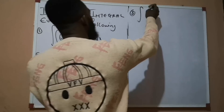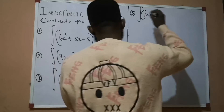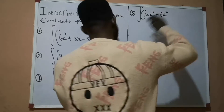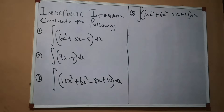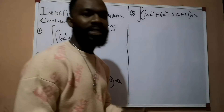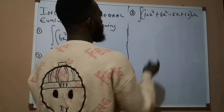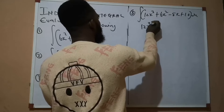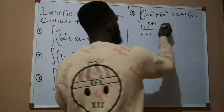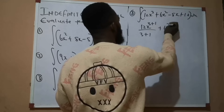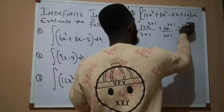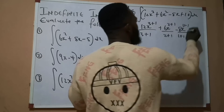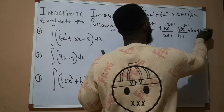Question number 3 says: integrate 12x³ + 6x² − 8x + 10 dx. We repeat the same process — add 1 to the powers and place the new power as the denominator. So it becomes 12x raised to power 3+1 over 3+1, plus 6x raised to power 2+1 over 2+1, minus 8x raised to power 1+1 over 1+1, plus 10x plus k.